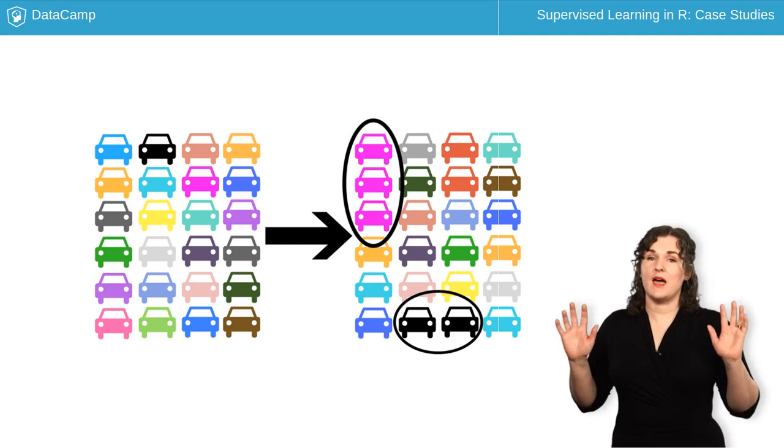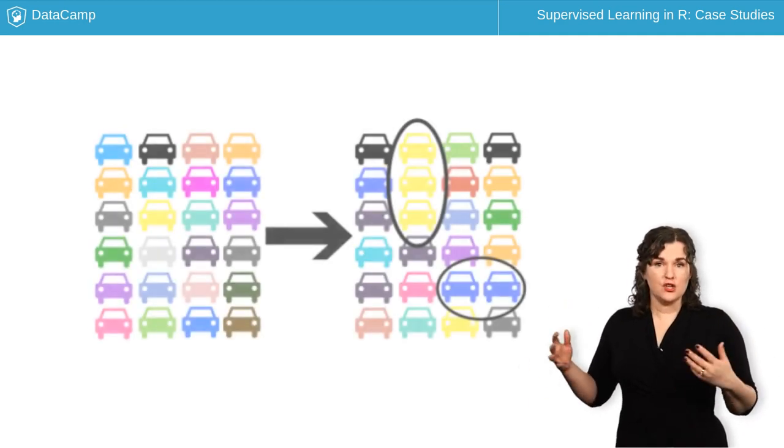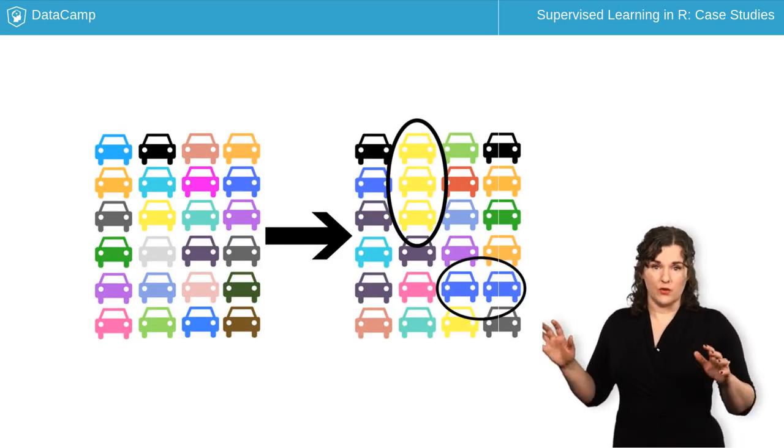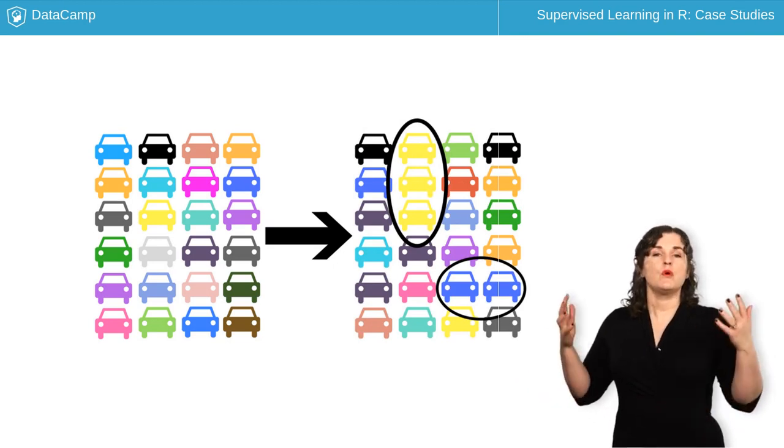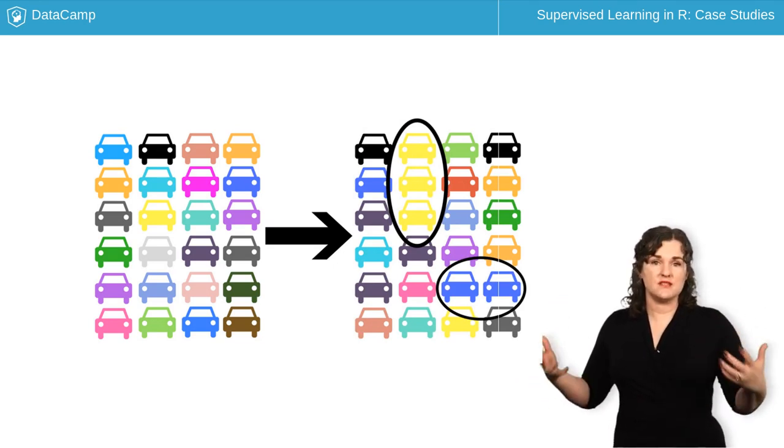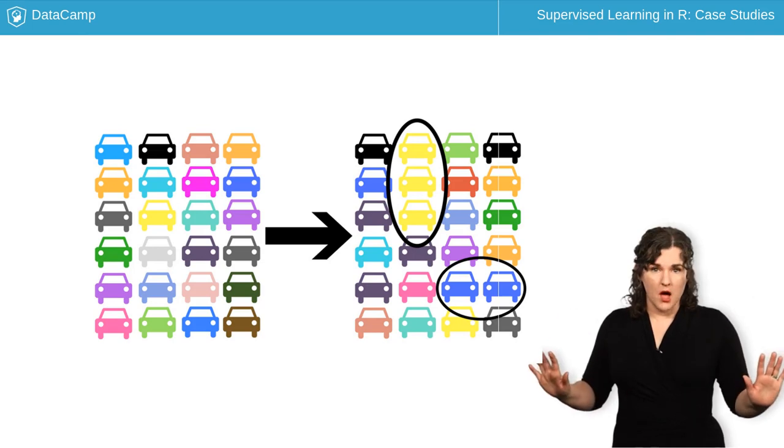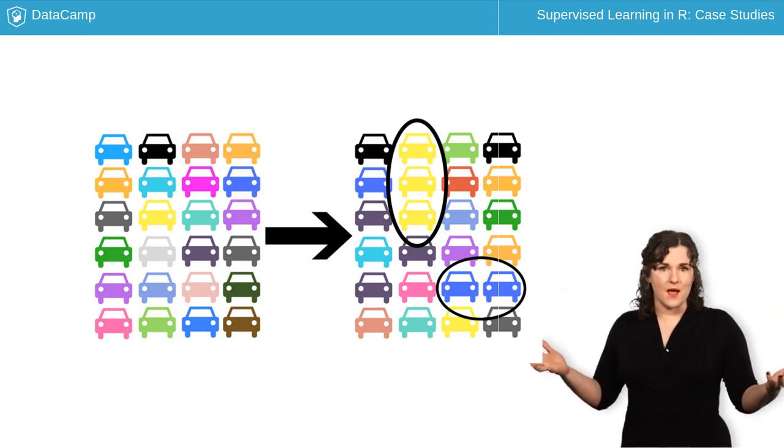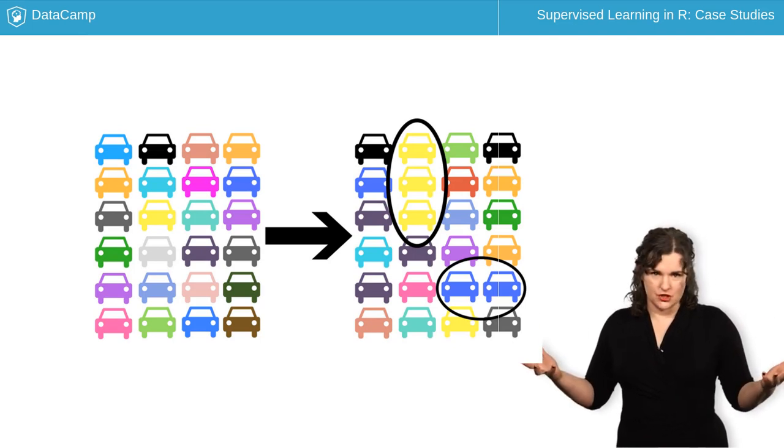Then, we do that again. We draw 900 times from the training set with replacement and fit a model. We repeat that some number of times, look at all the models we fit on the bootstrap samples, combine them, and then take an average of some kind.